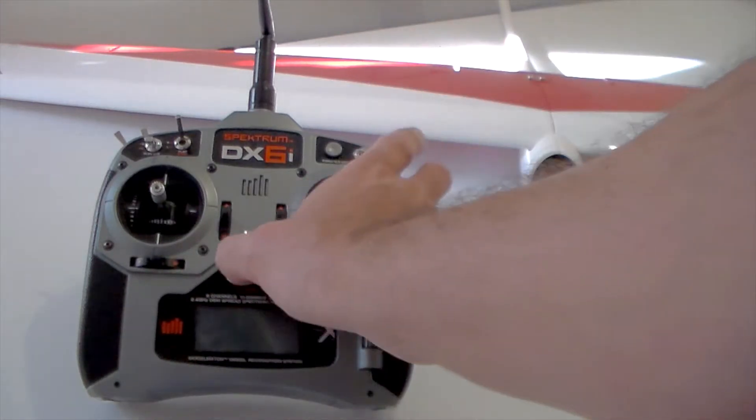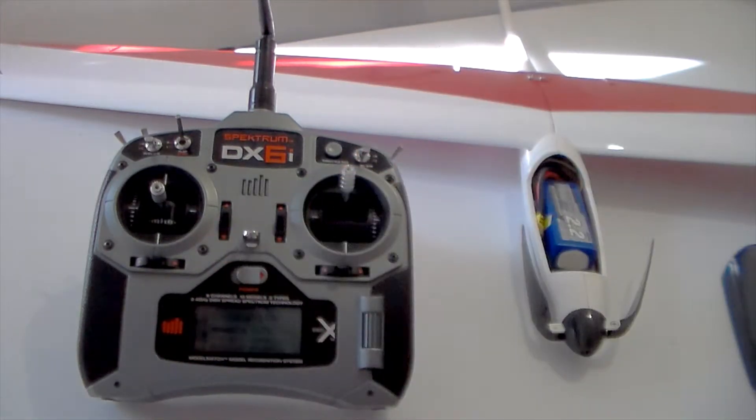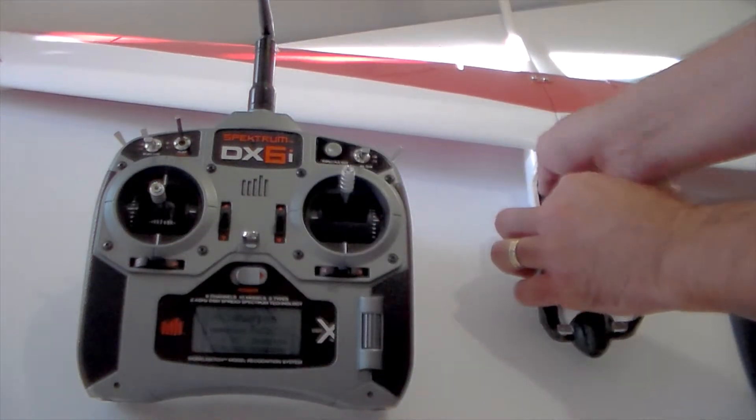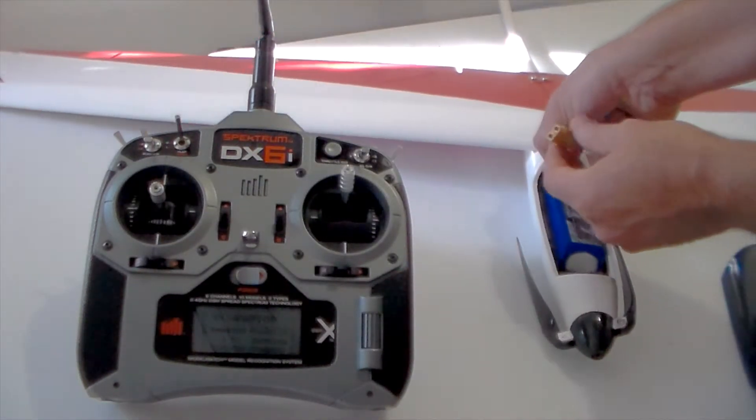First thing, throttle up to full, turn on the transmitter as usual. The next thing is to connect the battery so that the ESC is powered.